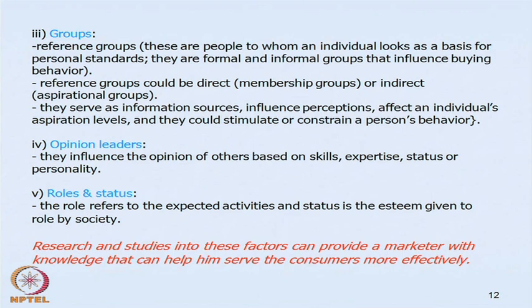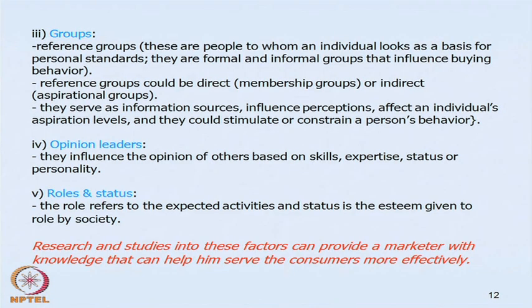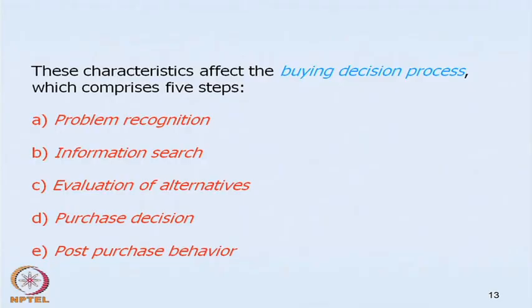Roles and statuses in society also affect consumer decision making — roles refer to certain activities, and status is the esteem given to a role by society. Research into these social, personal, psychological and cultural factors can provide marketers with knowledge to serve consumers more effectively. These buyer characteristics, within the buyer's black box, have an impact on the five-stage buying decision process: problem recognition, information search, evaluation of alternatives, purchase decision and post-purchase behavior.